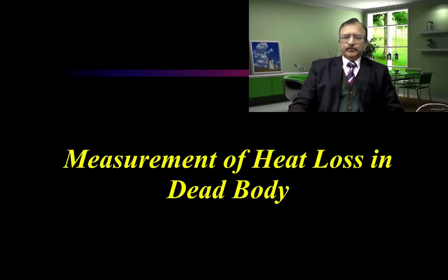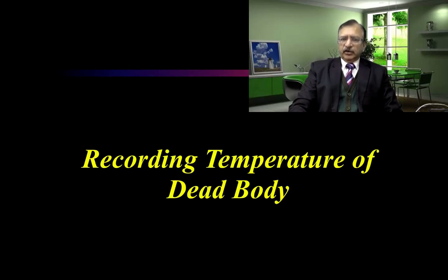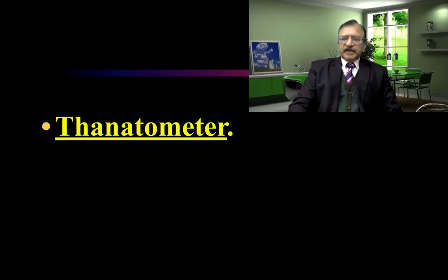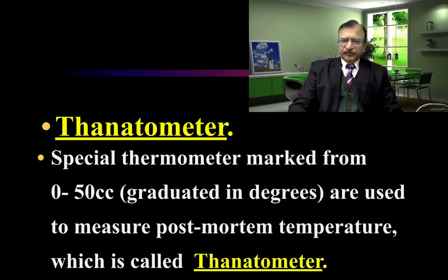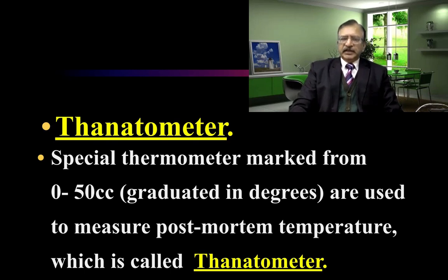In this lecture, we cover the measurement of heat loss in the dead body, that is, recording of temperature of the dead body. It is done by a thanometer, which is a special thermometer marked from 0 to 50 degrees Celsius, graduated in degrees, and used to measure post-mortem temperature.